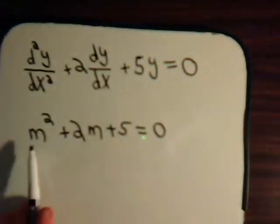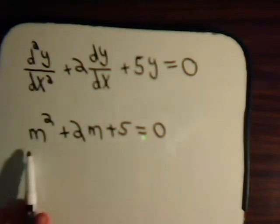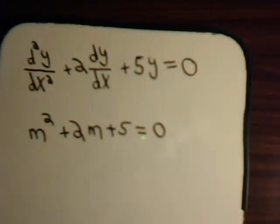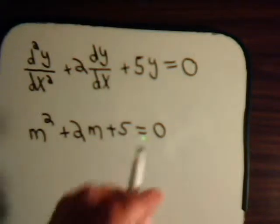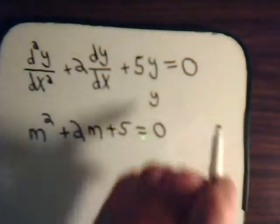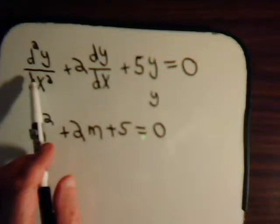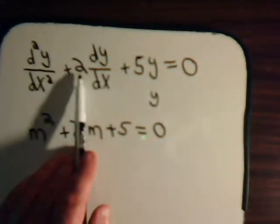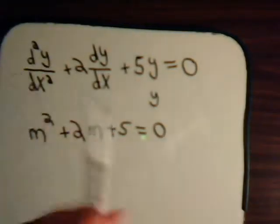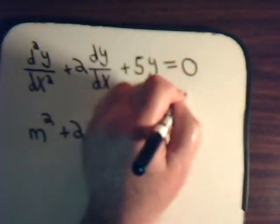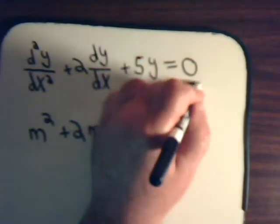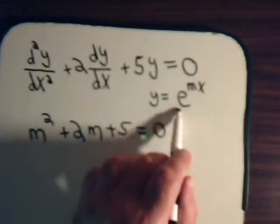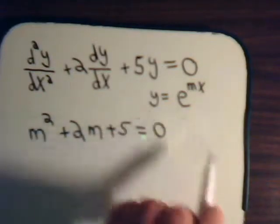And then we solve for m. And remember from our introduction video, concerning auxiliary equations, that the premise was that the general solution to these kind of equations, where we have a second-order differential equation, and all of the coefficients are constants, then y equals e to the mx.